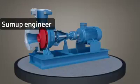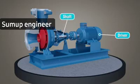A centrifugal pump consists of four main components: the driver, the shaft, the impeller, and the casing.